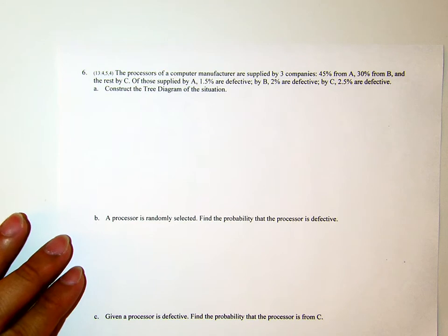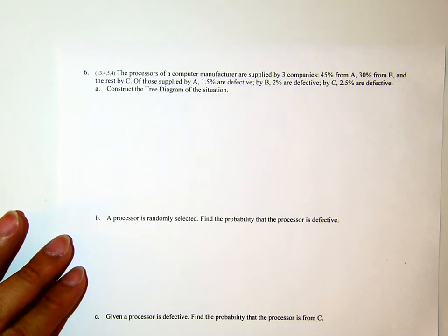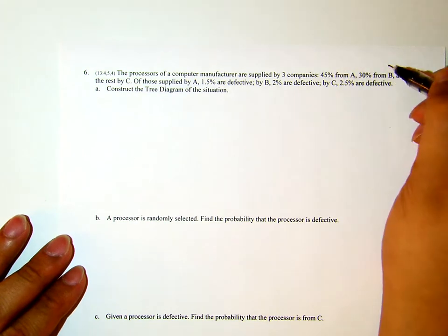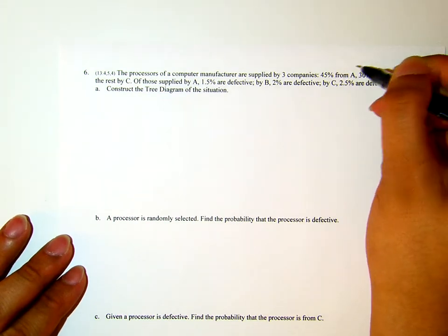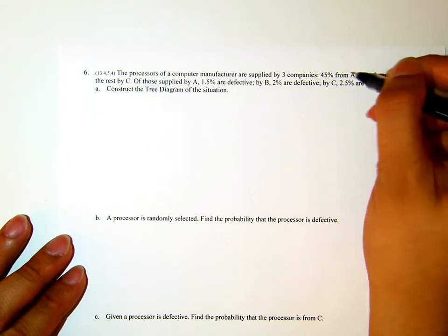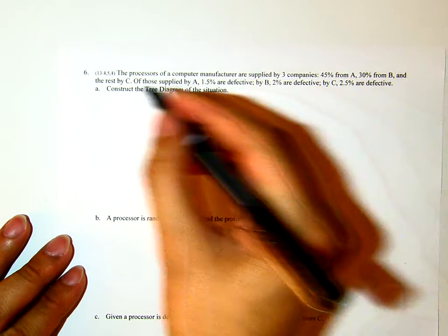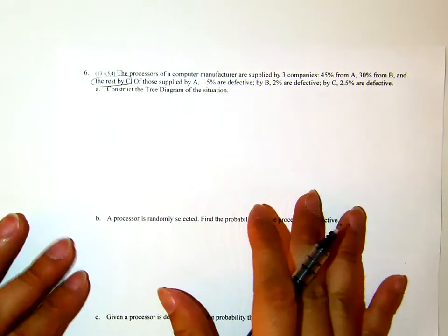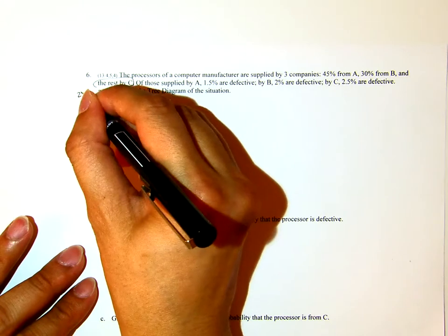The processors of a computer manufacturer are supplied by 3 companies: 45% from A, 30% from B, and the rest from C. 45% from A, 30% from B, so far that's 75% from A or B, then the rest, C, is 25%.